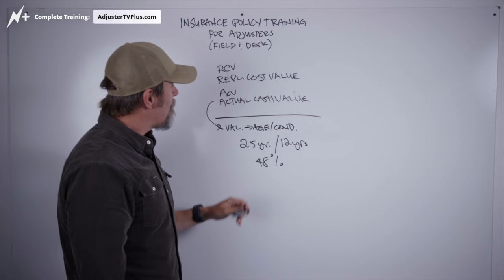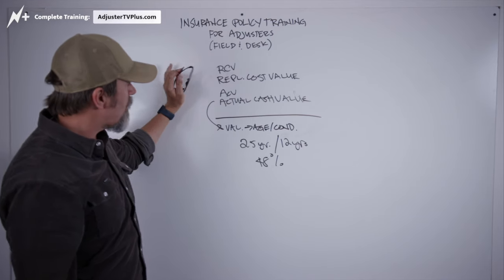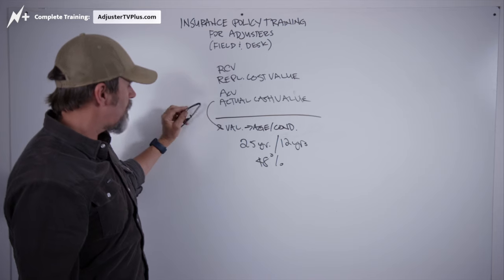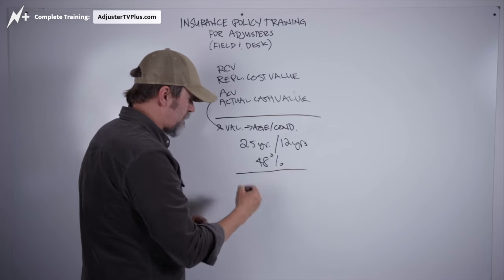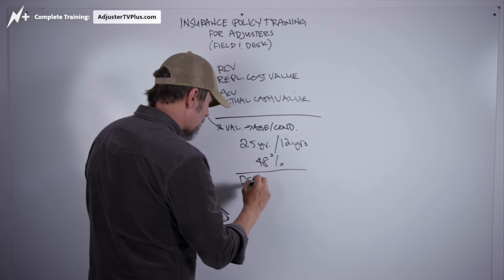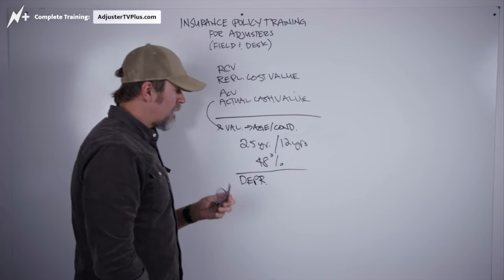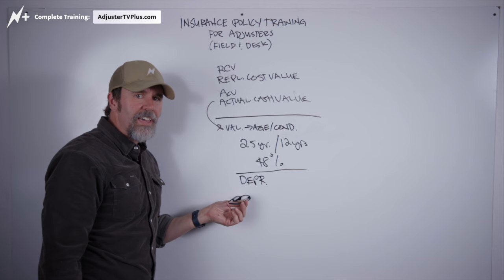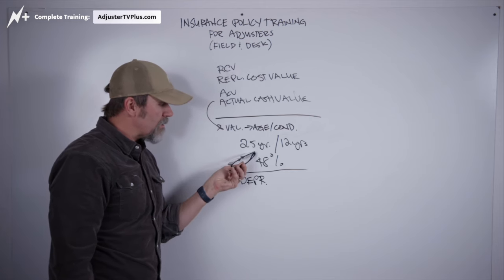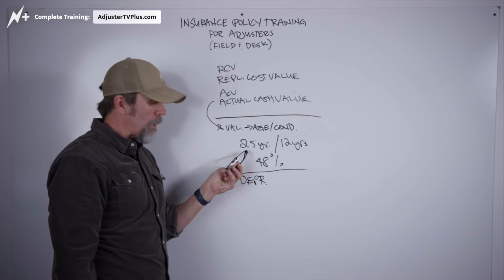Replacement costs and actual cash value are kind of linked together with depreciation. And depreciation again is just basically what's the value of the thing as it exists on the house right now based on its useful lifespan.